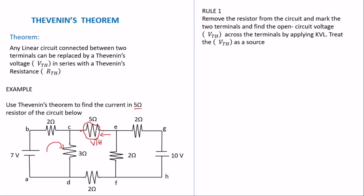For loop BCDA, I choose a direction to traverse it. I label the current from this source as I. The current moves around the loop and returns to the source because there is an open circuit — no current flows through the open branch. Applying KVL to loop BCDA gives: 7 = (2 + 3)I, because the current passes through both the 2-ohm and 3-ohm resistors. Solving: I = 7/5 amps.